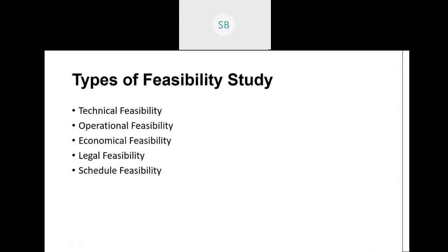Now we should know what types of feasibility study there are. It's not just a yes or no — we have to look into five kinds of feasibility criteria: technical feasibility, operational feasibility, economical feasibility, legal feasibility, and schedule feasibility.